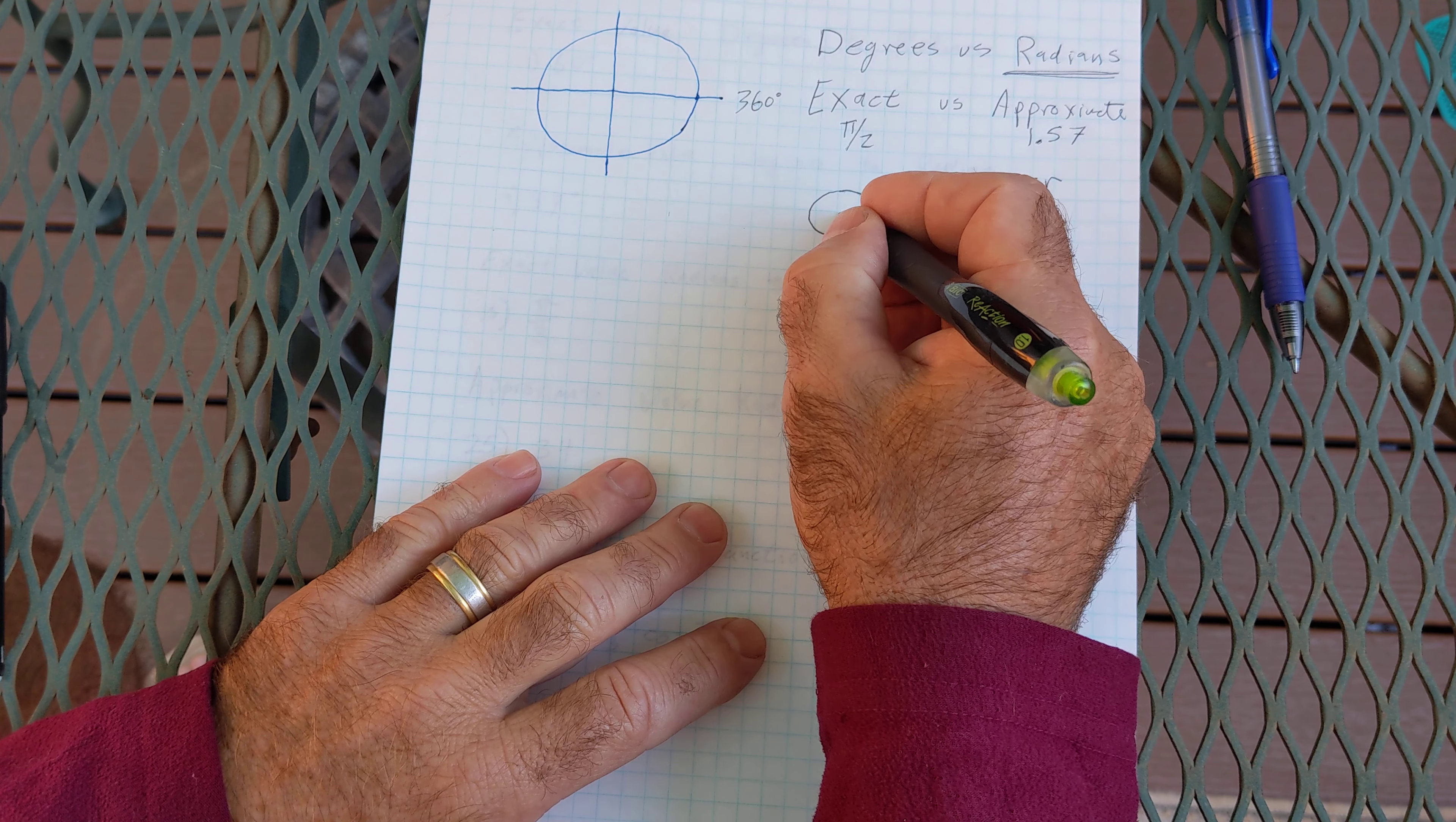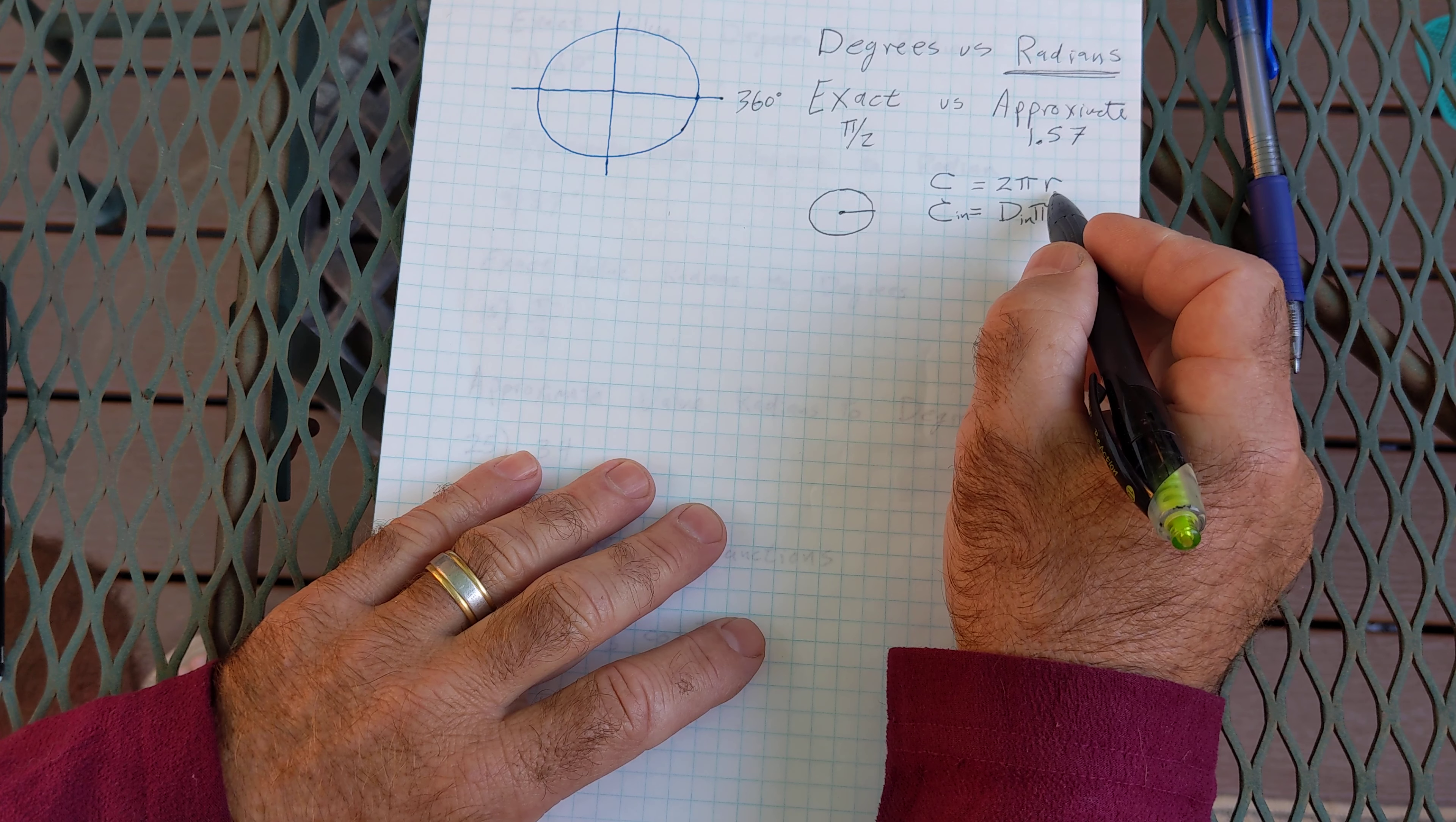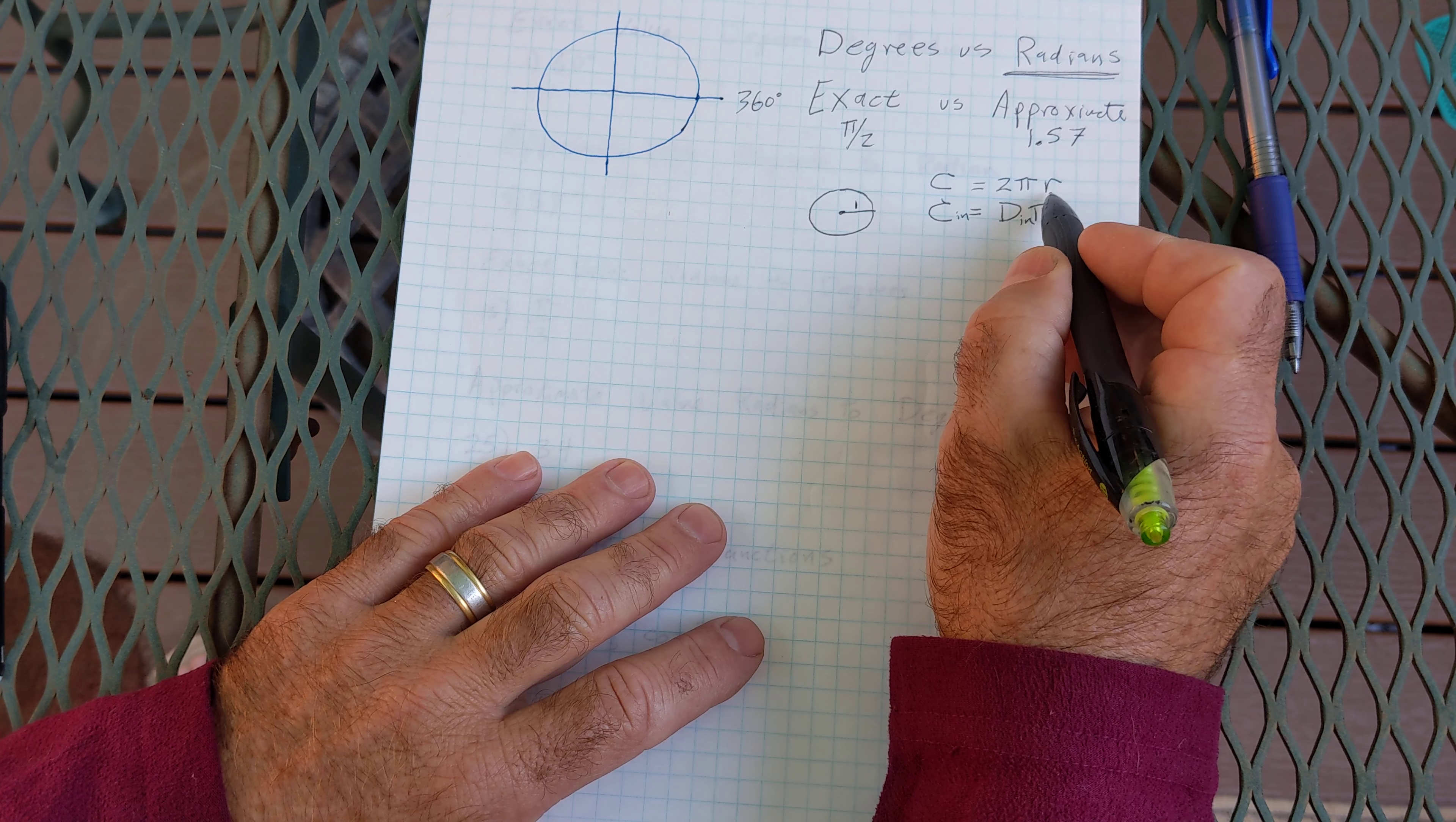So all the way around a circle the outside of a circle is called the circumference. The circumference is equal to 2 times pi times r, and if our radius is equal to 1 our circumference would be 2 times pi times 1 or 2 pi.